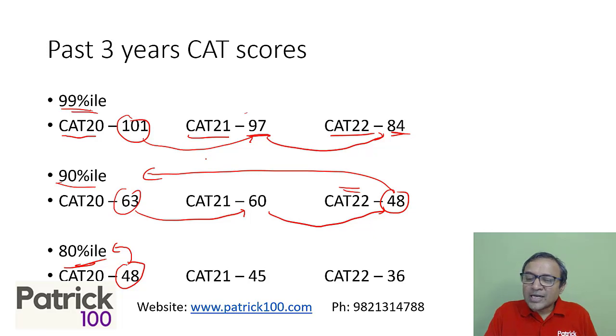Technically, this looks like the paper is getting more difficult, but practically, not necessarily. Because what happens is over the past history, if you look at CAT, its difficulty level keeps varying. It becomes tougher, tougher, and it becomes easier.